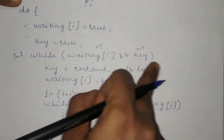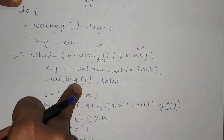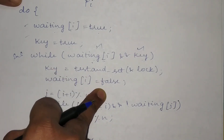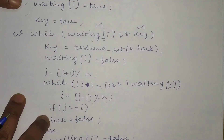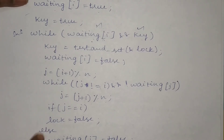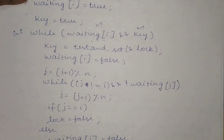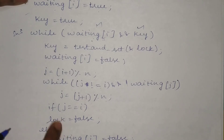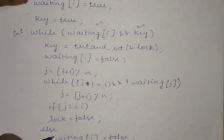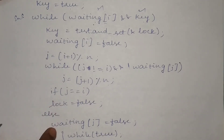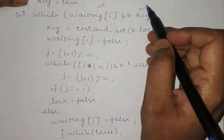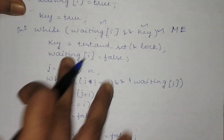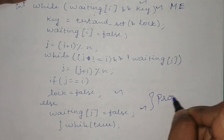After the condition is no longer true, the key is assigned false and waiting[i] is set to false, meaning process Pi now enters the critical section. After executing the critical section it proceeds to the exit section, where either lock is set to false or waiting[j] is set to false. By changing one of these two values, it allows another process to enter the critical section. The entry section condition achieves mutual exclusion, and the exit section statements achieve progress.